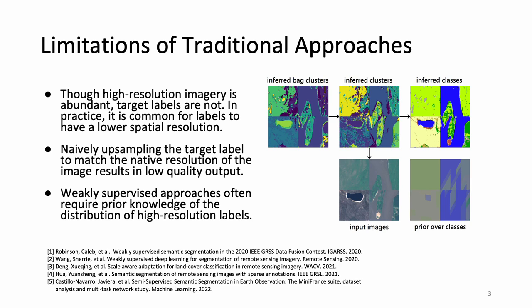As high-resolution imagery has become more available, the cost of collecting pixel-level annotations that match the image quality has become increasingly apparent. In practice, it is much easier to obtain coarse, low-resolution labels. Existing strategies for learning from low-resolution labels either: 1) ignore the resolution mismatch problem entirely by naively upsampling the target label, 2) consider only partial or image-level labels, or 3) require statistical information relating the distribution of high-resolution labels to low-resolution labels during the learning process.